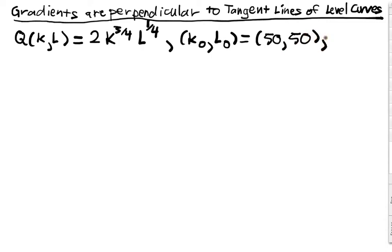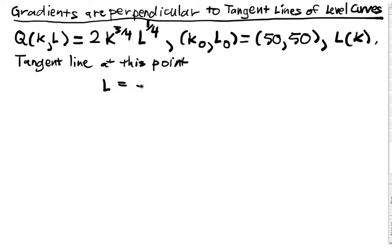And we could construct an implicit function l of k around this point, and that was great. And we found that the tangent line satisfied l equals negative 3 times k minus 50 plus 50.